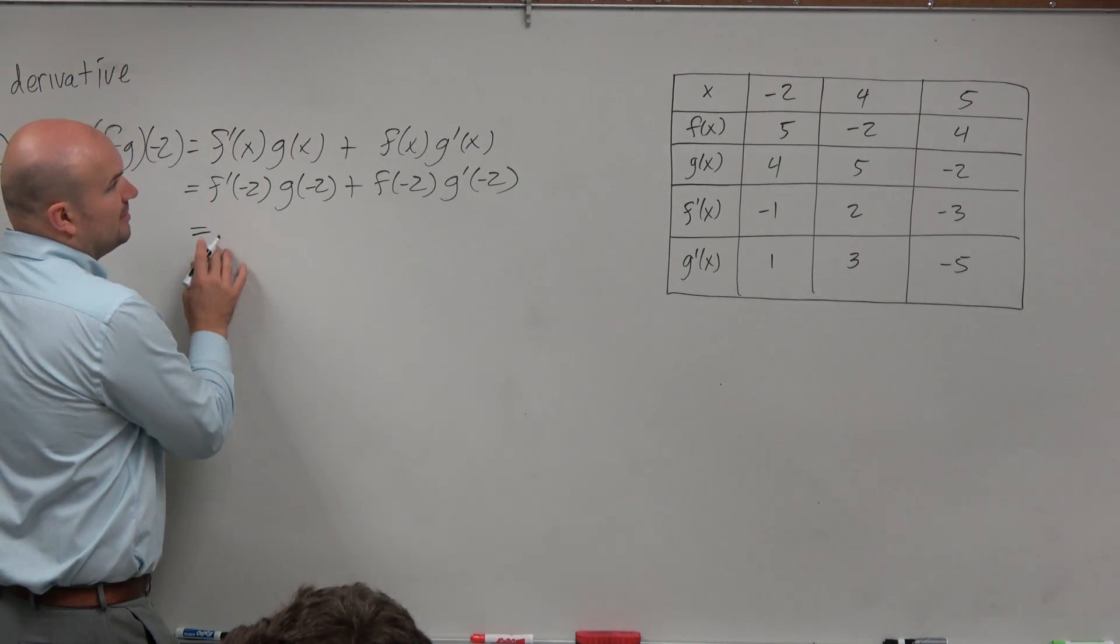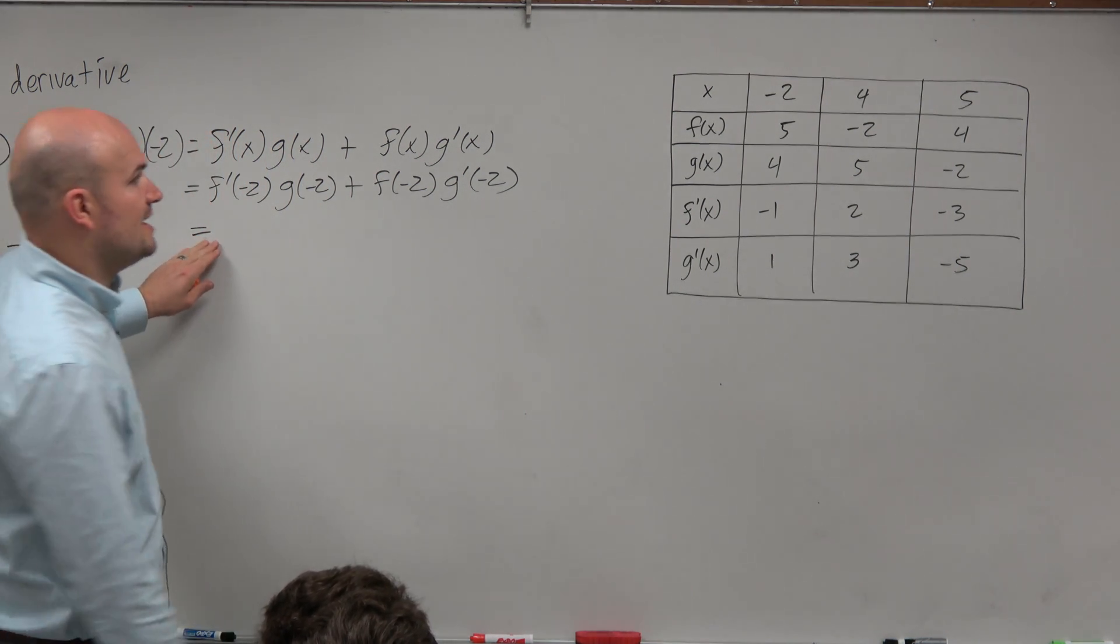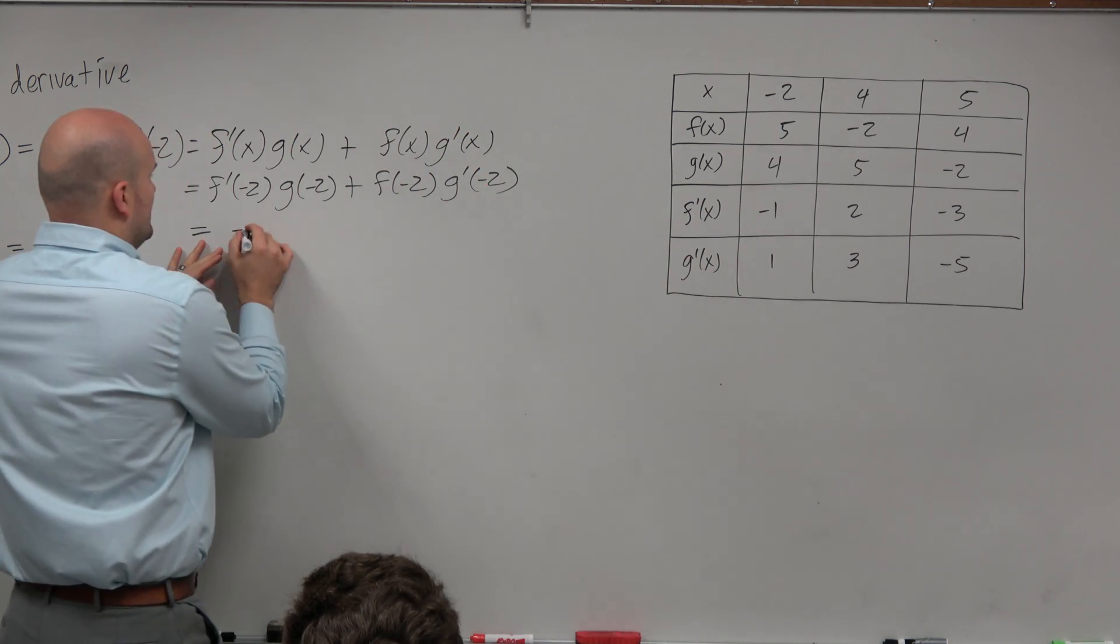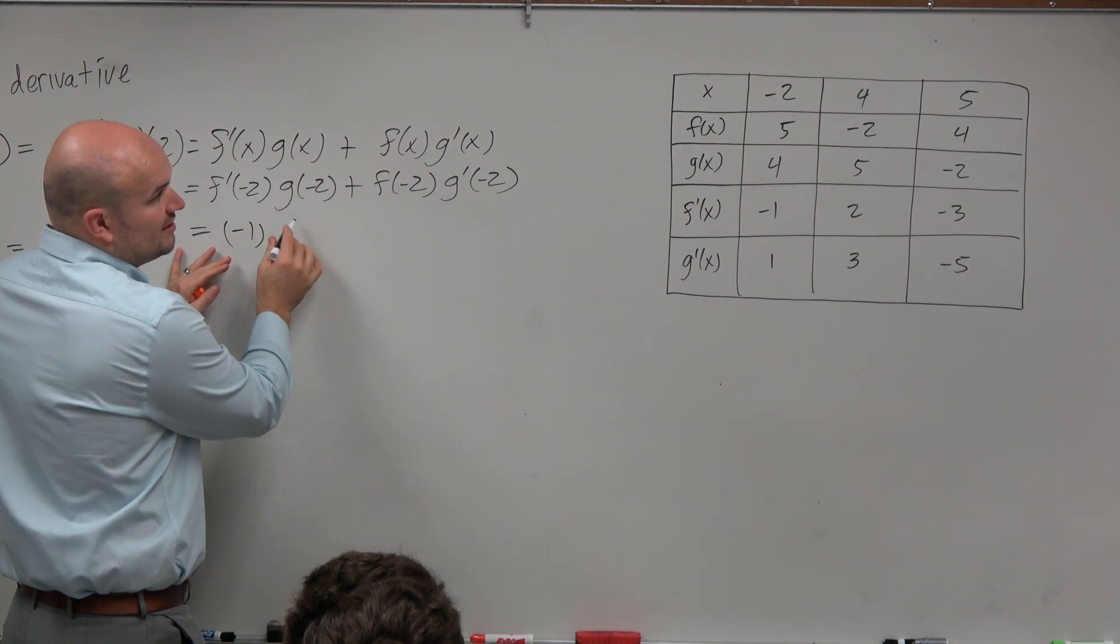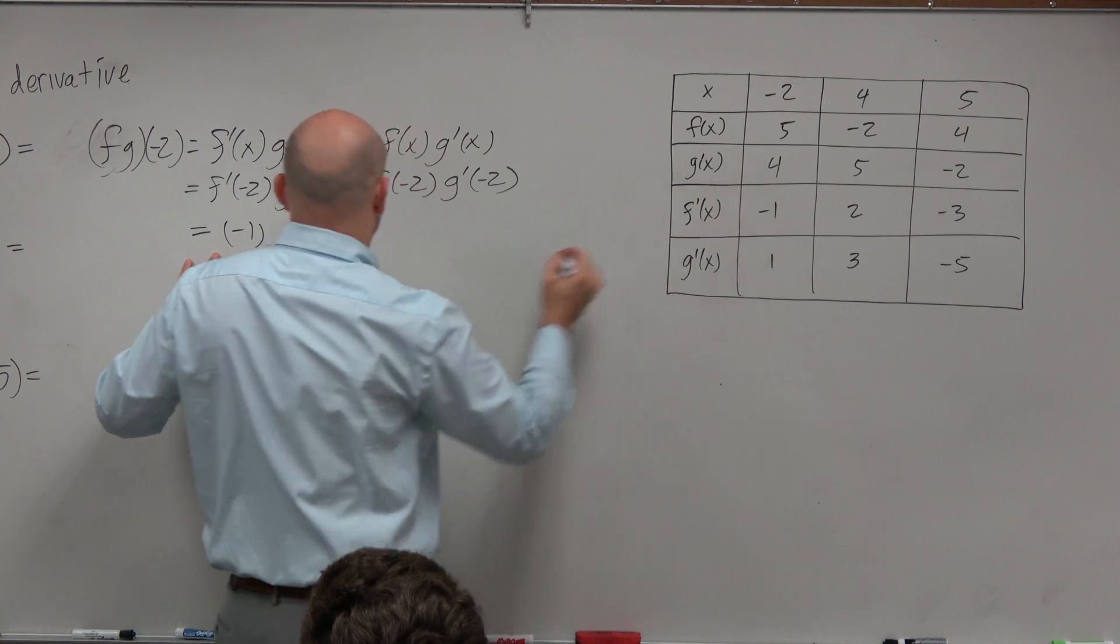But now we can just go to our table and find f prime of negative 2, which is negative 1. g of negative 2 is 4,